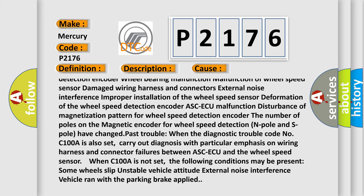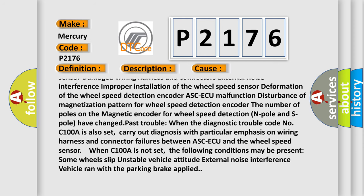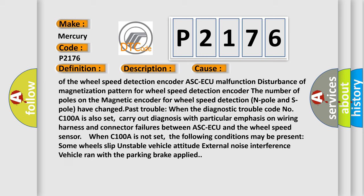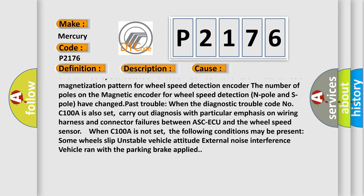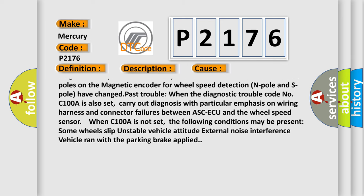The ASC ECU malfunction, disturbance of magnetization pattern for wheel speed detection encoder, the number of poles on the magnetic encoder for wheel speed detection N pole and S pole have changed. Past trouble: When the diagnostic trouble code No. C100A is also set...